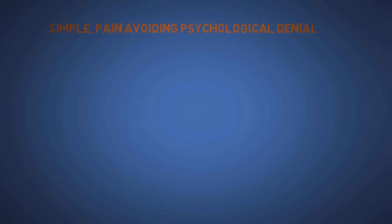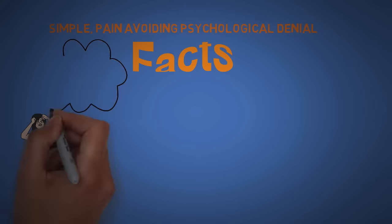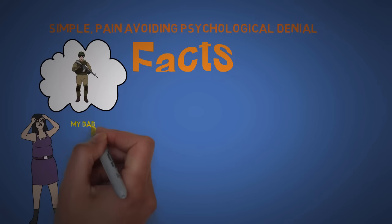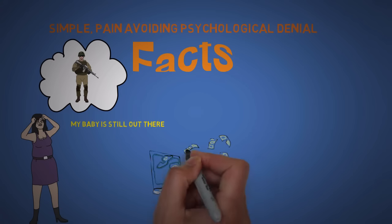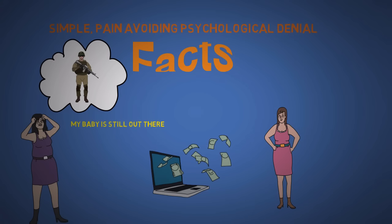The eleventh is simple pain avoiding psychological denial. We have a habit of distorting the facts. There's stories of mothers who receive news that their son from the army died and refuse to believe it. We can trick ourselves to numb the pain. Get rich quick or lose weight quickly scams work effectively on people who are in denial.